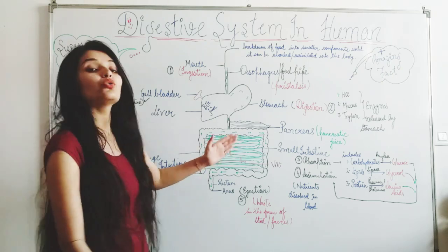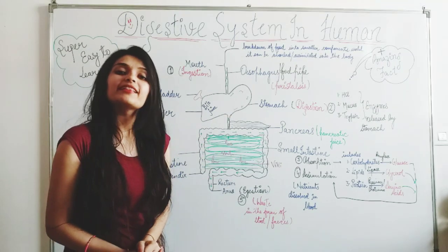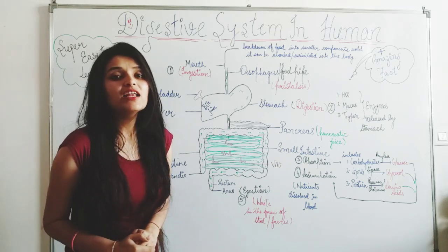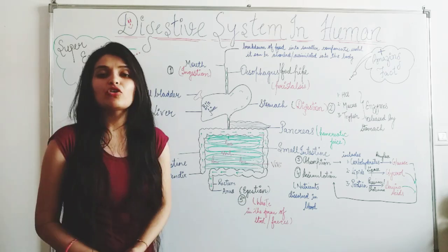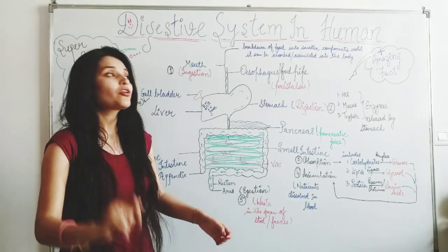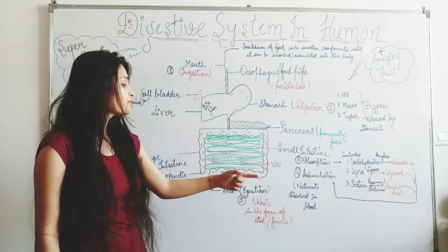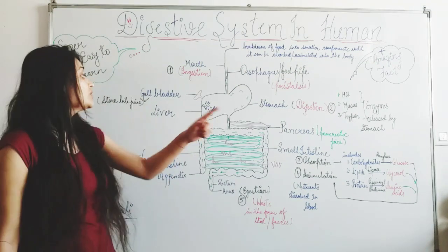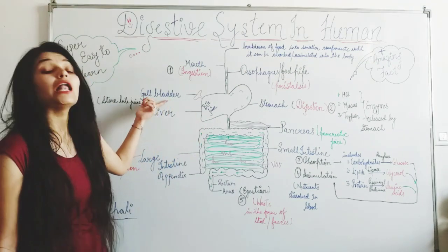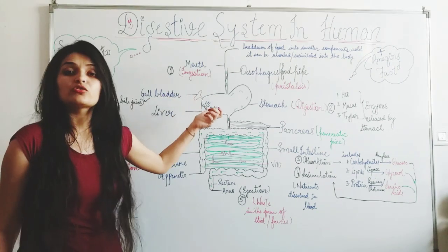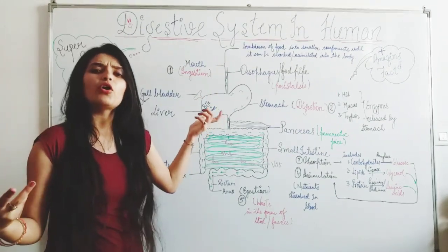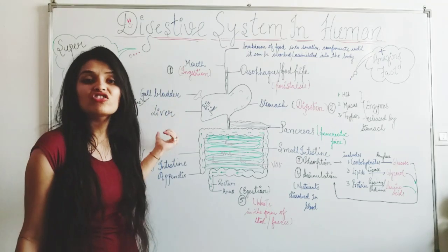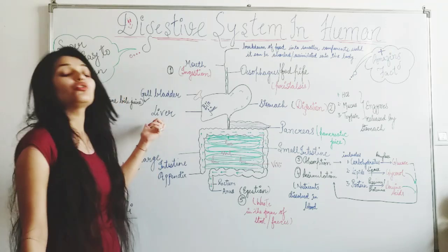I hope everything is clear. You can take a snapshot of this. Just to recap — there are five processes: ingestion, digestion, absorption, assimilation, and egestion. One important thing to note: the gallbladder stores bile juice. If the body produces excess bile juice, it is stored in the gallbladder. Also, the liver is the largest gland of our body — that should be known to you.